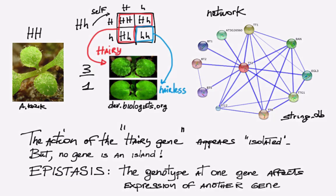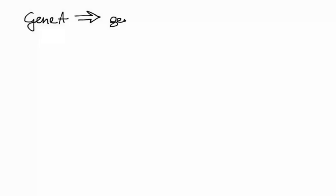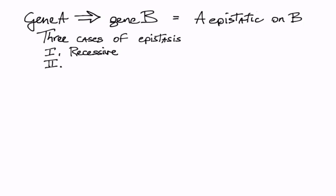Let's see how it works. I will use three examples where gene A is epistatic on gene B to illustrate three cases: recessive, dominant, and double recessive epistasis. The real gene names may be different in reality, but I will stick to A and B for comparison.